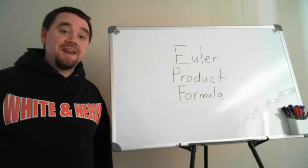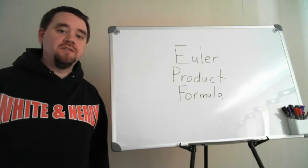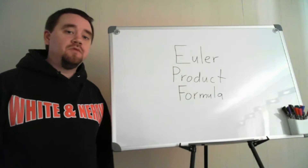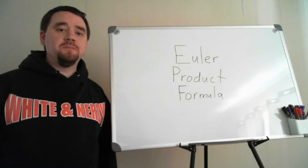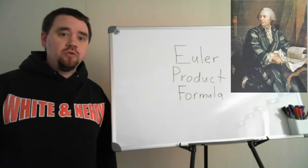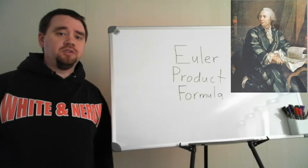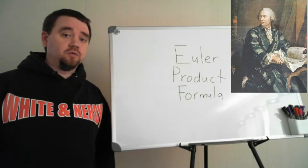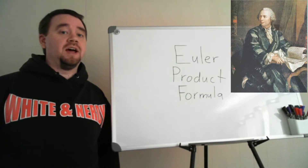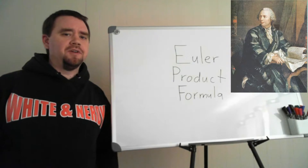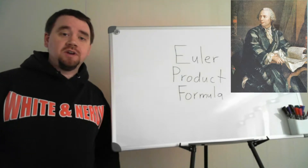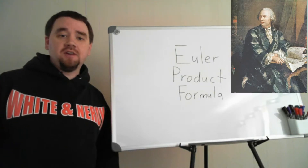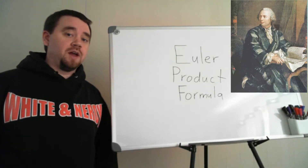Hey everyone, welcome to my next video. Today we're going to be covering the Euler product formula. This is a formula named for the 18th century Swiss mathematician Leonard Euler, who was probably the most prolific mathematician of all time, writing more papers than any other mathematician, and doing the majority of his work after he had gone completely blind. Today we're going to talk about this formula, which is a relationship between sums of natural numbers and products of prime numbers.